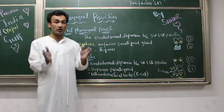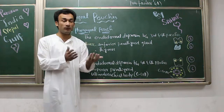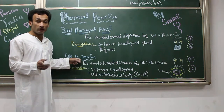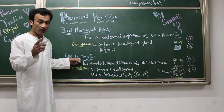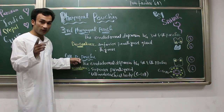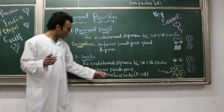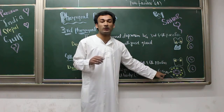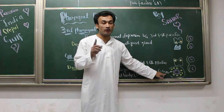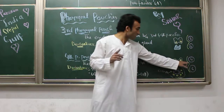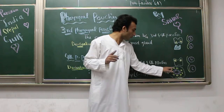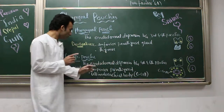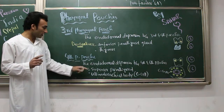The ultimobranchial body or C-cells (parafollicular cells) are also derivatives of neural crest cells, because there is migration of neural crest cells into this fourth pharyngeal pouch. So remember: the derivatives of the fourth pharyngeal pouch are the superior parathyroid gland and the ultimobranchial body — also called C-cells or parafollicular cells.